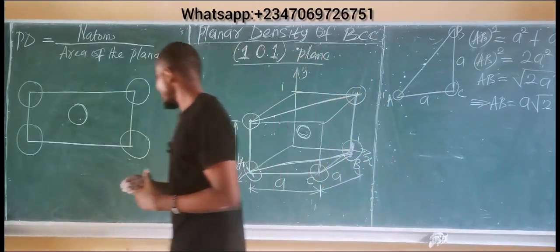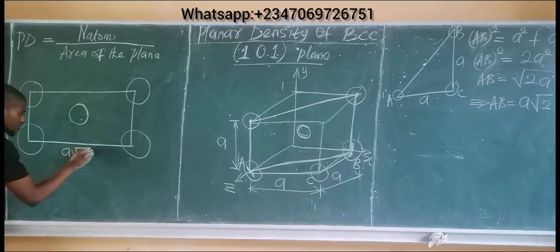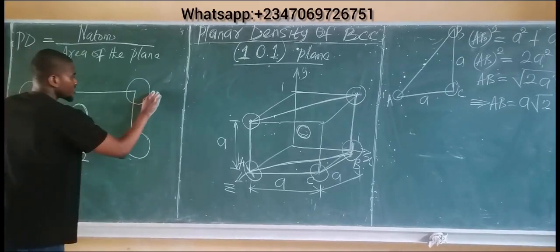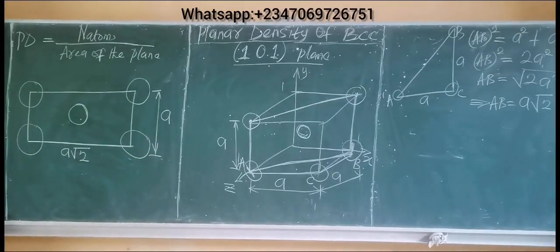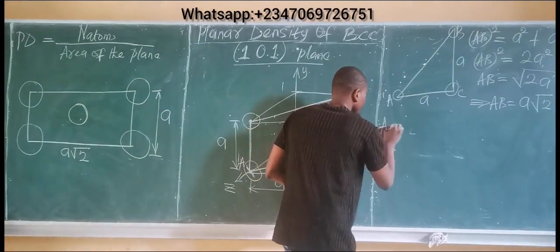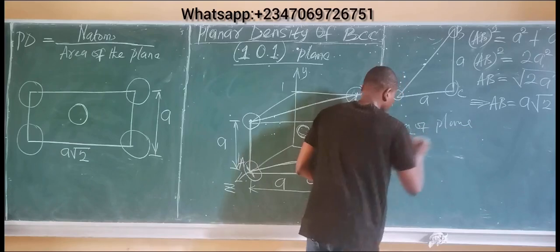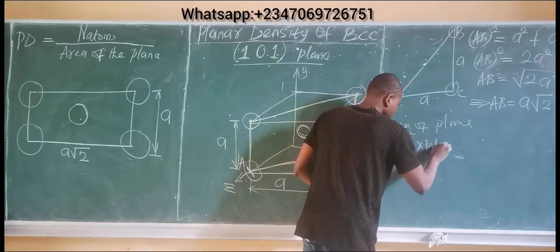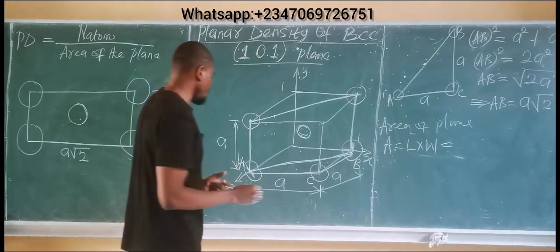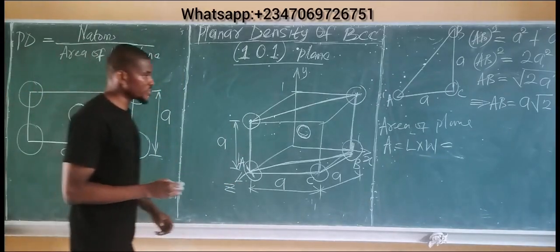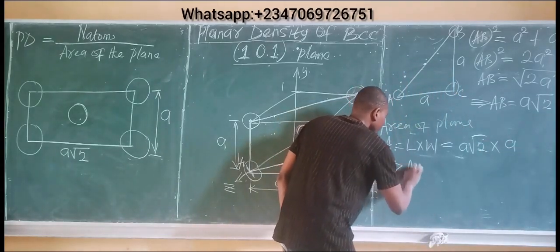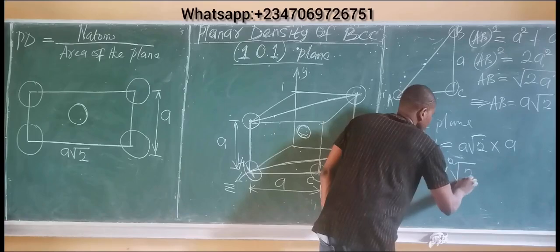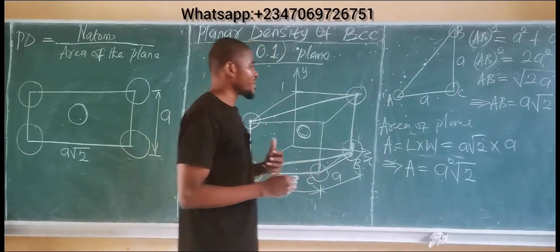The length of the rectangle is a√2, and the width remains the lattice constant 'a'. Therefore, the area of the plane = length × width = a√2 × a = a²√2. This gives us the area of the plane.